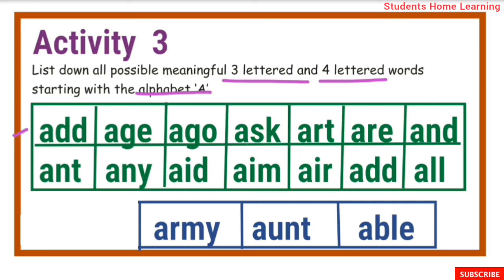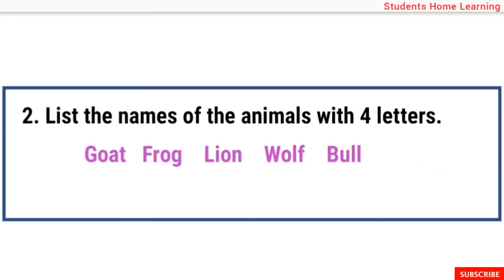The 4-lettered words starting with A include: army, aunt, able. Also, list the names of animals with 4 letters: goat, frog, lion, wolf, bull.